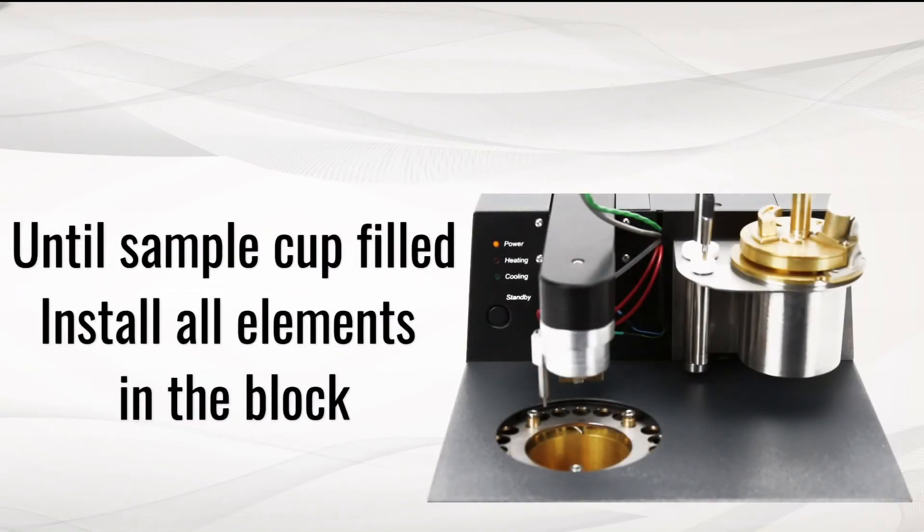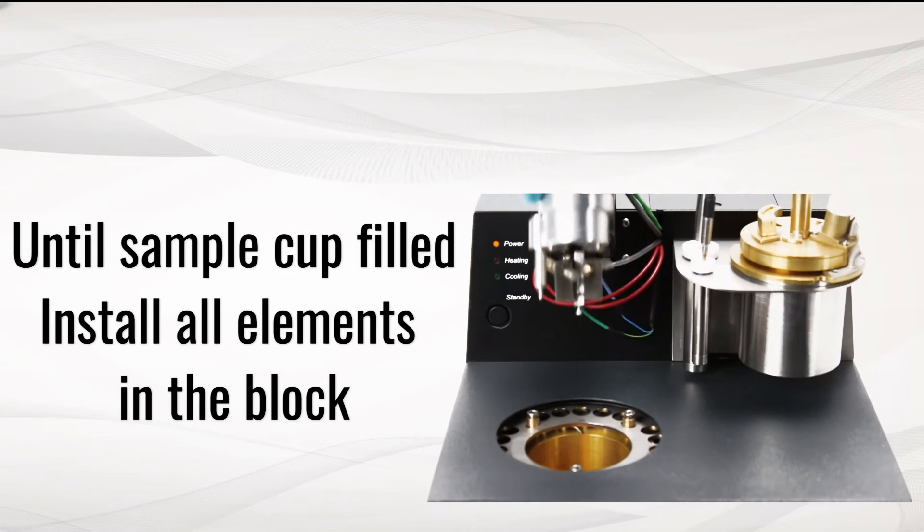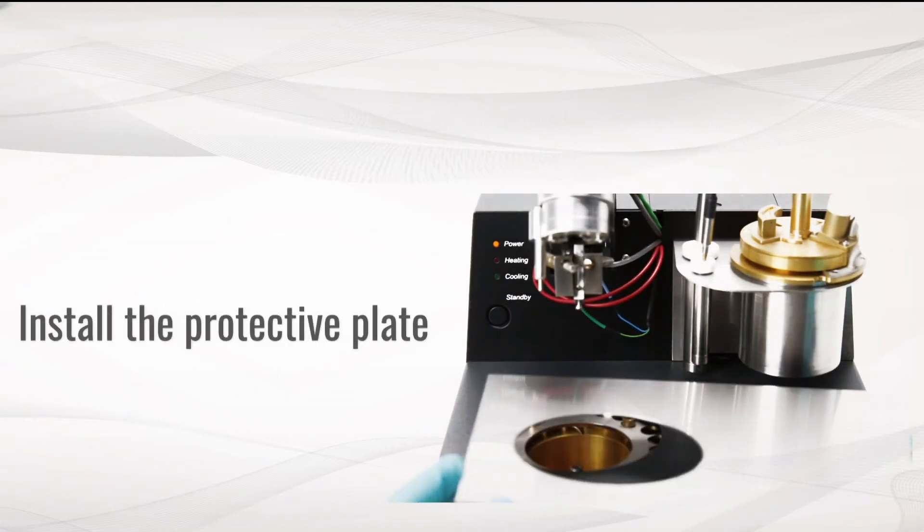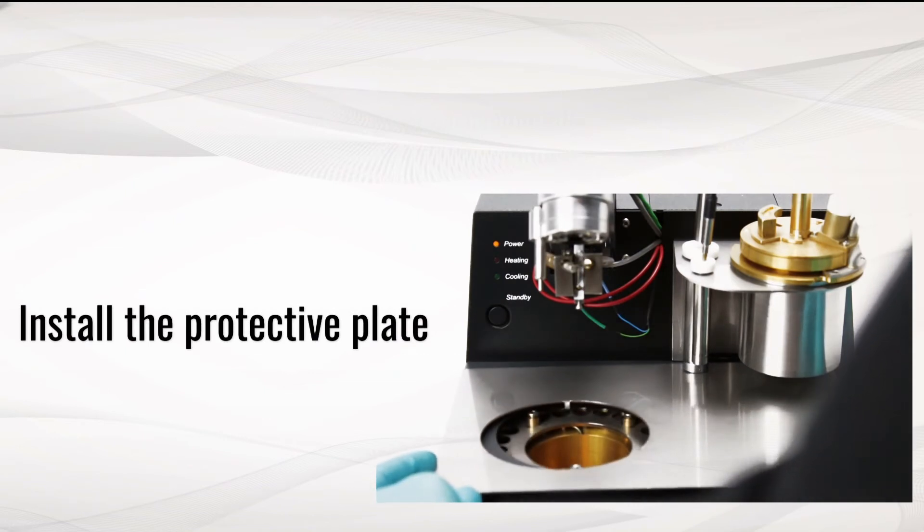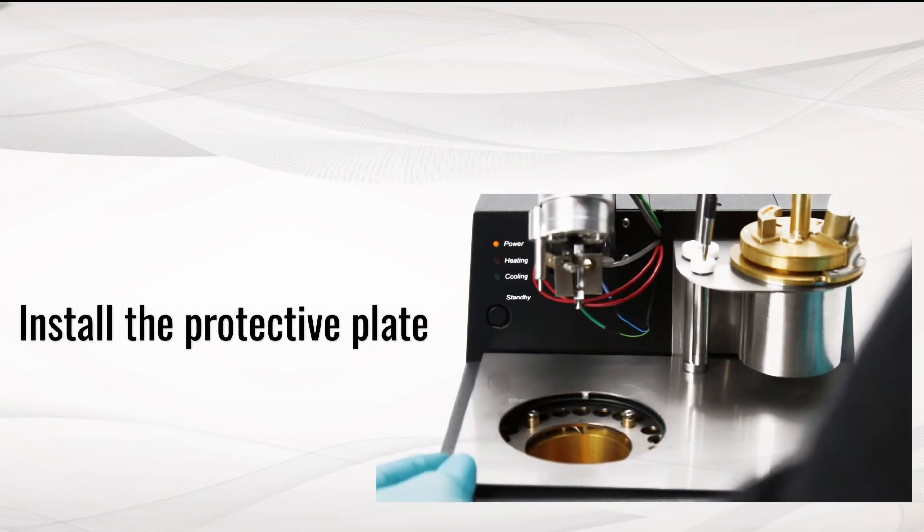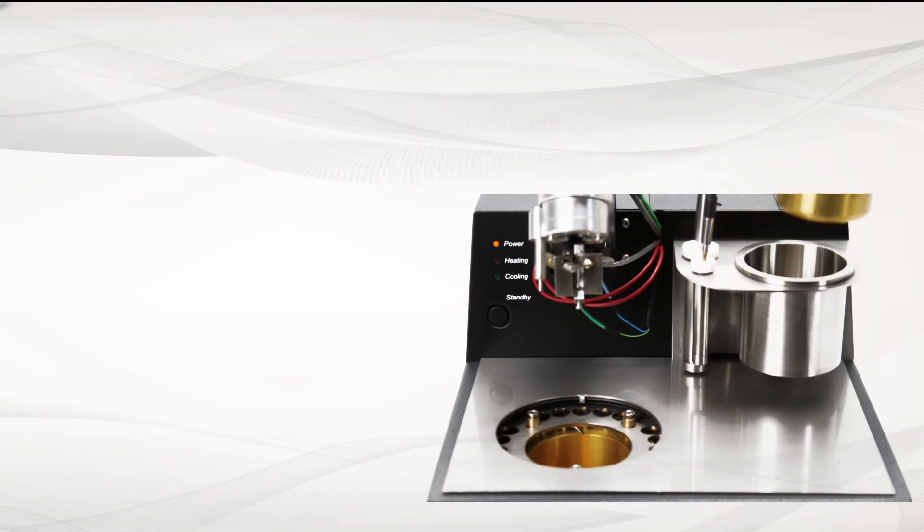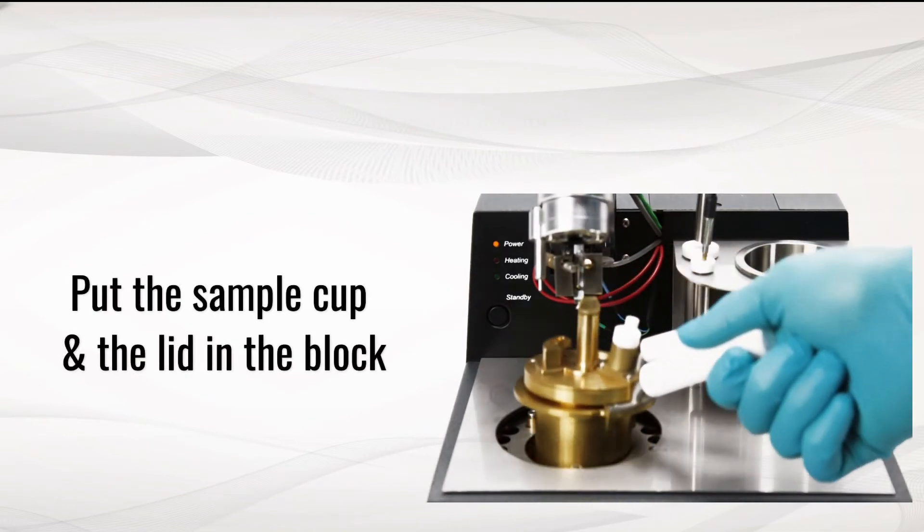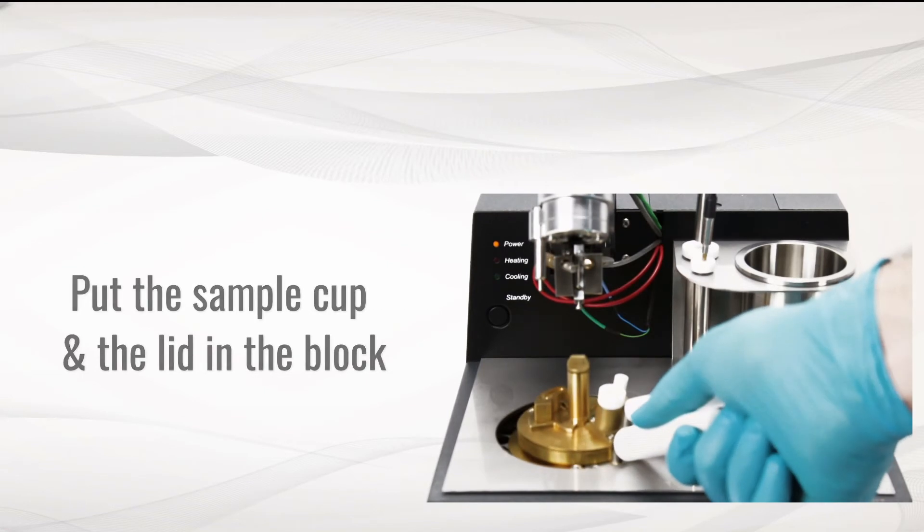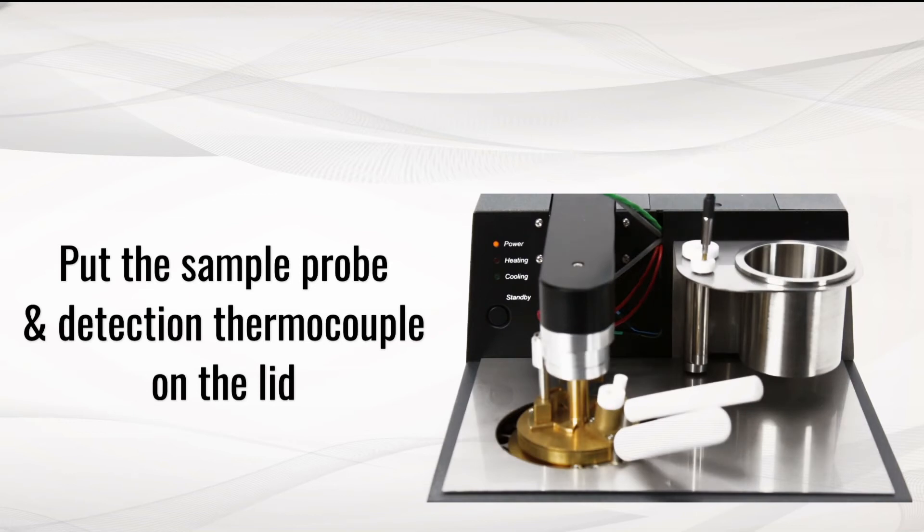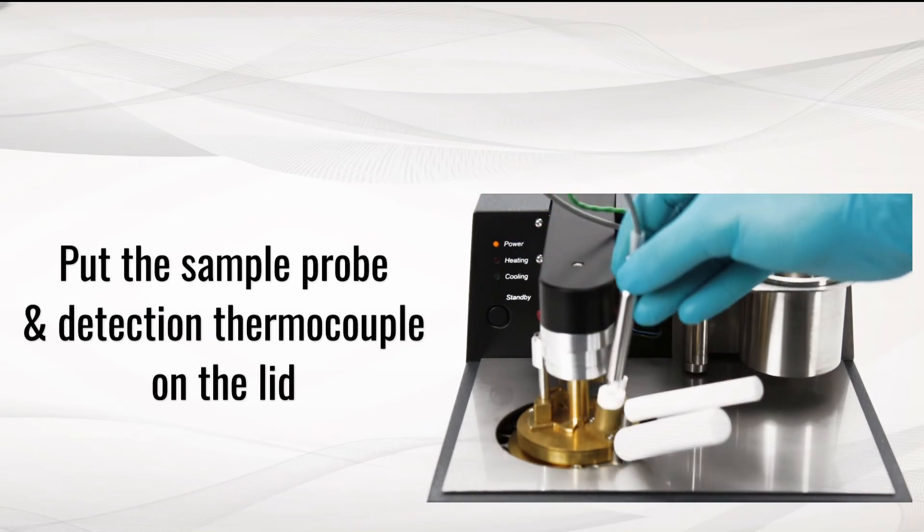Fill the cup with the sample to be tested. Install all elements in the block. Install the protective panel. Install cup and lid on the holder. Lower the arm on the lid. Put the sample probe and detection thermocouple on the lid.